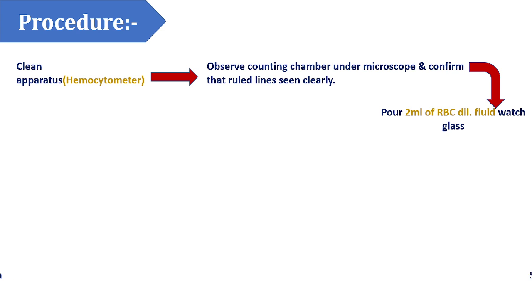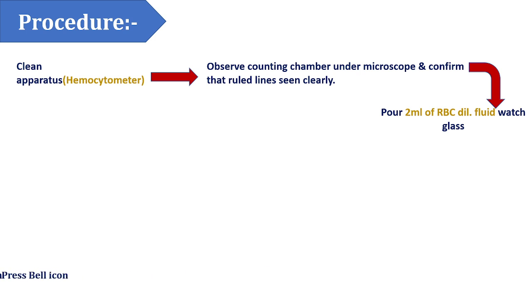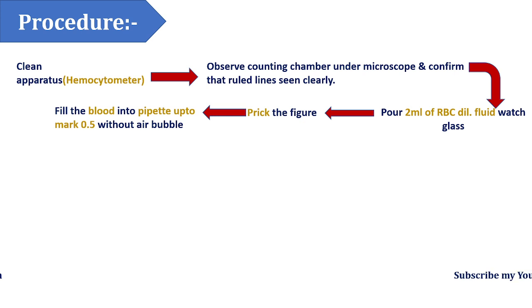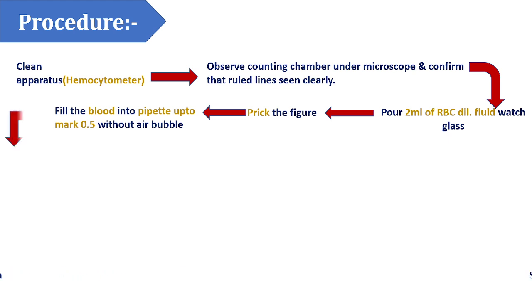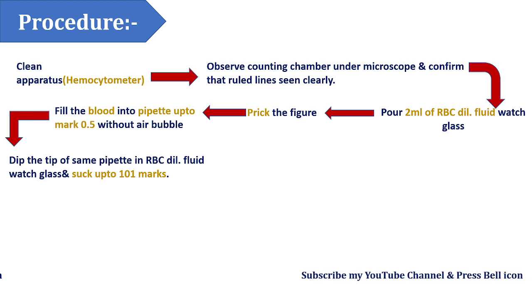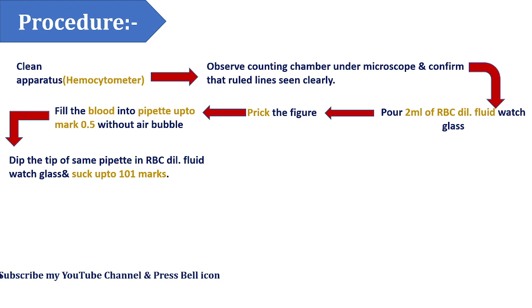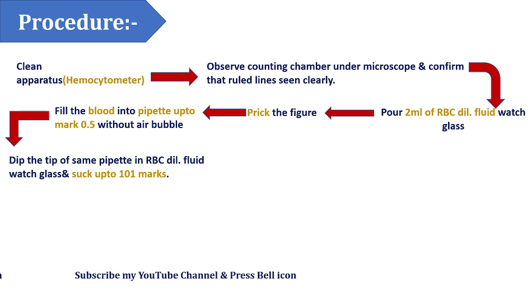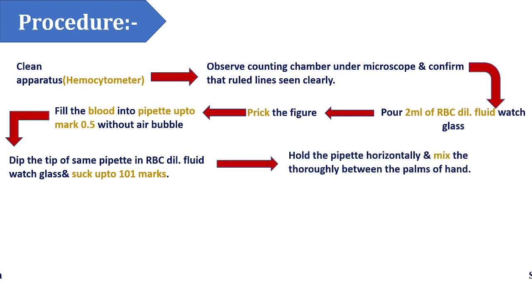Take 2 ml of RBC diluting fluid in a watch glass. The composition of this fluid was covered in a previous slide. Then do a finger prick to collect a blood drop. Fill the RBC diluting pipette with blood up to the 0.5 mark without air bubbles. Next, dip the pipette into the watch glass containing RBC diluting fluid and draw it up to the 101 mark, so the blood and diluting fluid fill up to that mark. Close the rubber tube and hold the pipette horizontally with both hands.